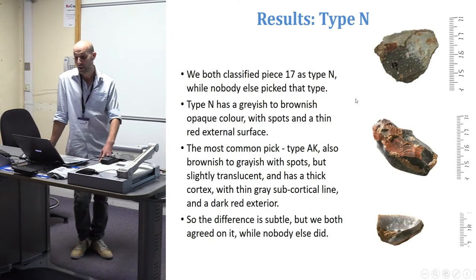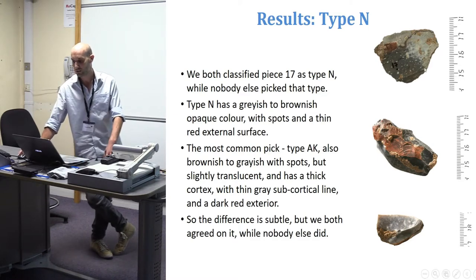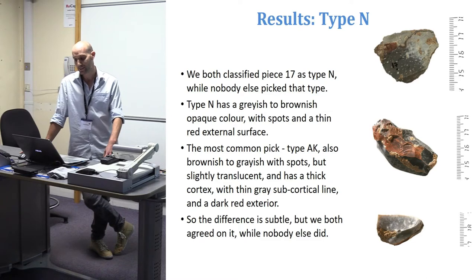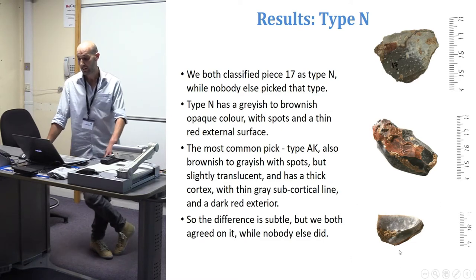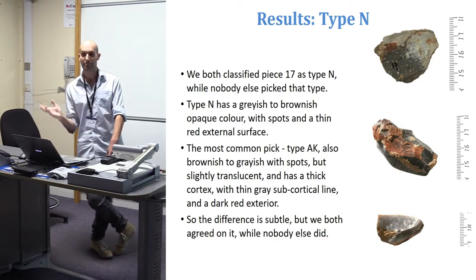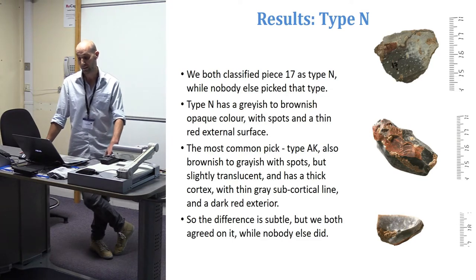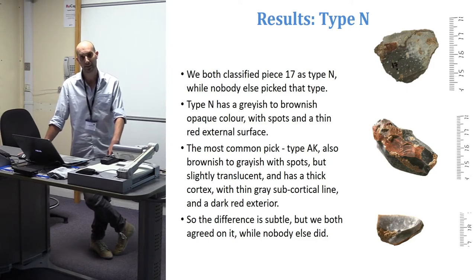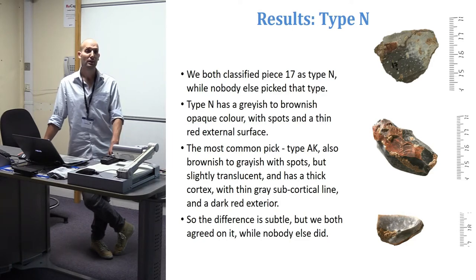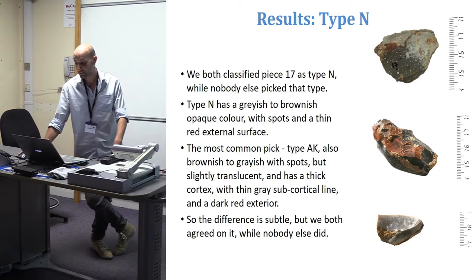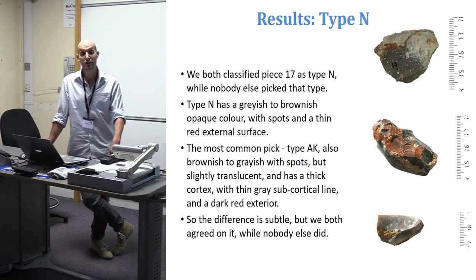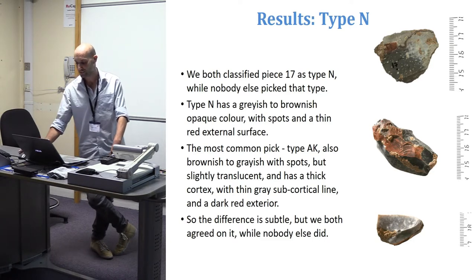For Type N, Lucy and I both classified piece number 17 as Type N, while nobody else picked that type. The most common pick instead was Type AK, which resembles Type N — both are grayish to brownish in color — but Type N is opaque while Type AK is more translucent, with a thick cortex, thin gray subcortical line, and dark red exterior. The difference is subtle, but we considered them two separate distinctive flint types. The fact that nobody else agreed strongly supports the explanation that experience affects your ability to consistently classify raw materials.